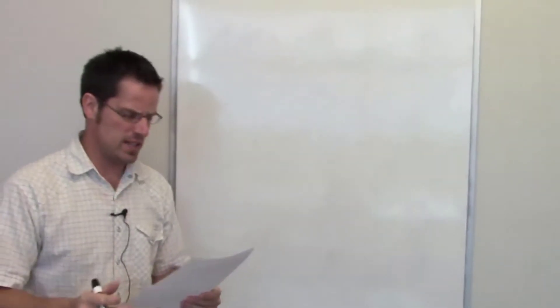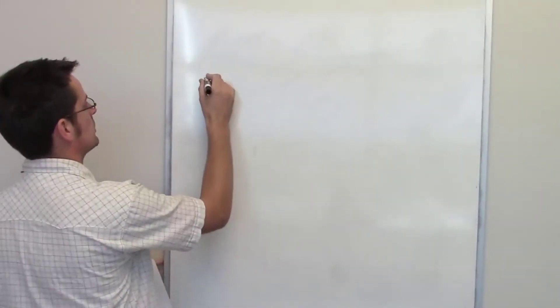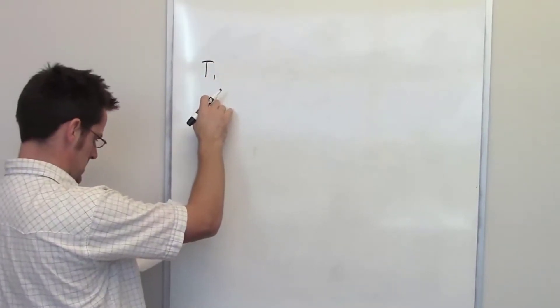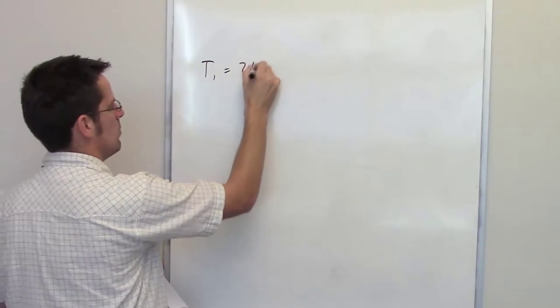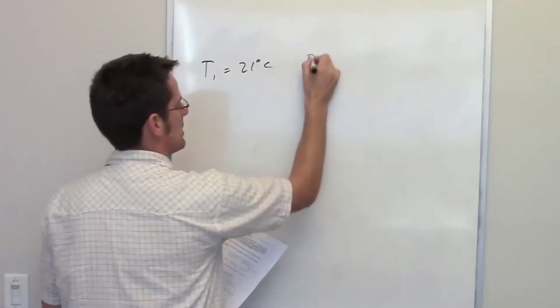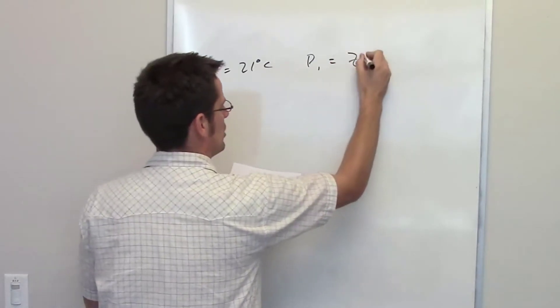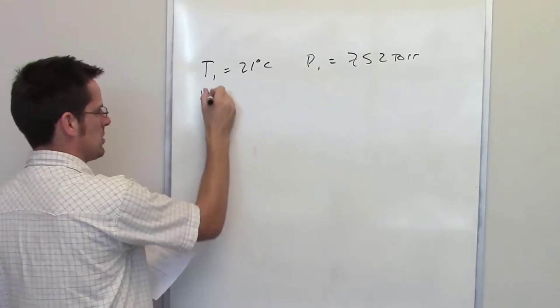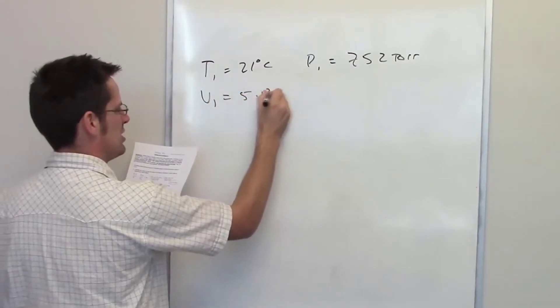In this problem we're told that a fixed gas at a temperature of 21 degrees Celsius, so T1 equals 21 degrees Celsius, exhibits a pressure, P1, of 752 torr, and occupies a volume, V1, of 5.12 liters.